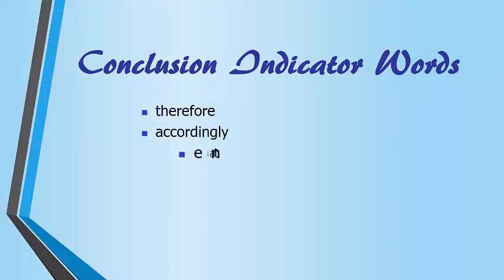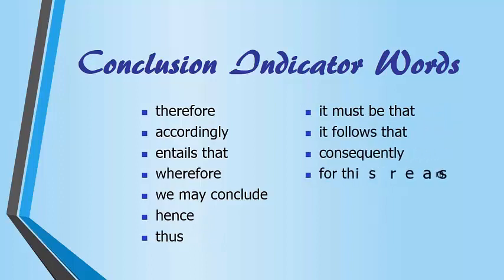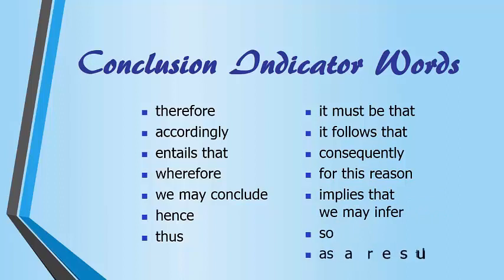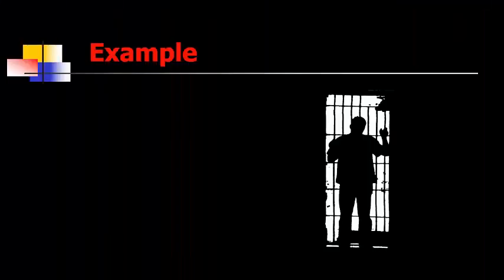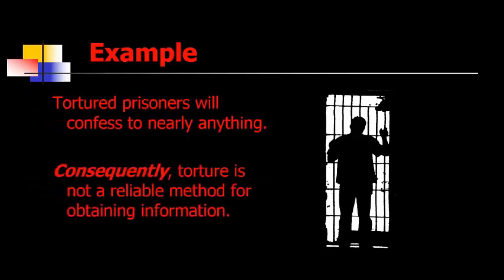But before we study logic in any detail, we've got to get more clear on how to distinguish conclusions and premises. One helpful hint is indicator words, and just about any good logic textbook is going to give you a list something like this: therefore, accordingly, entails that, wherefore. Don't memorize the list — just get the basic principle that these are conclusion indicators. They tell you that somebody is about to state the conclusion of their argument. For example, somebody might say, 'tortured prisoners will say anything to relieve their pain, and consequently, torture is not a reliable method for obtaining information from prisoners.' That term 'consequently' tells you that the person is about to state the conclusion reached upon their reasons or premises.